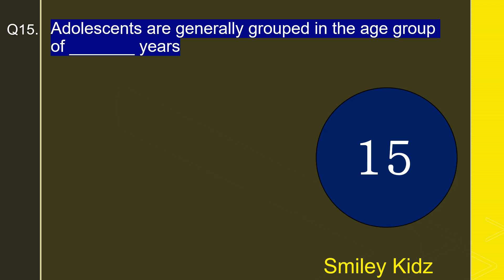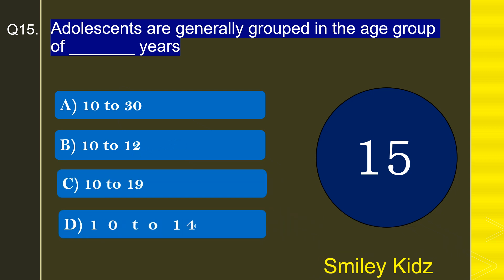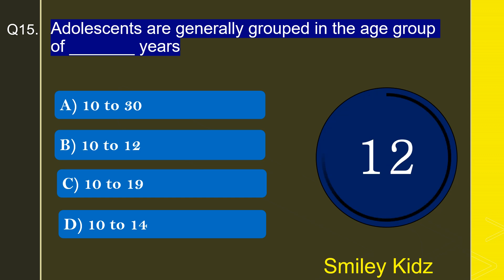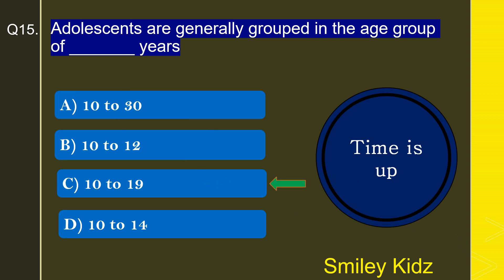Moving to question number 15: Adolescents are generally grouped in the age group of how many years? Options are 10 to 30, 10 to 12, 10 to 19, or 10 to 14. The correct answer is 10 to 19 years. Adolescents are generally grouped in the age group of 10 to 19 years.